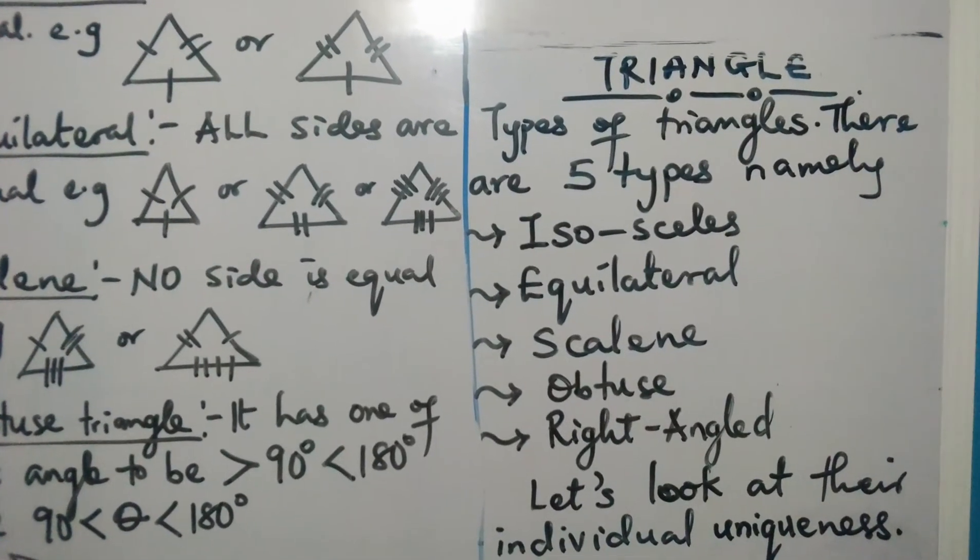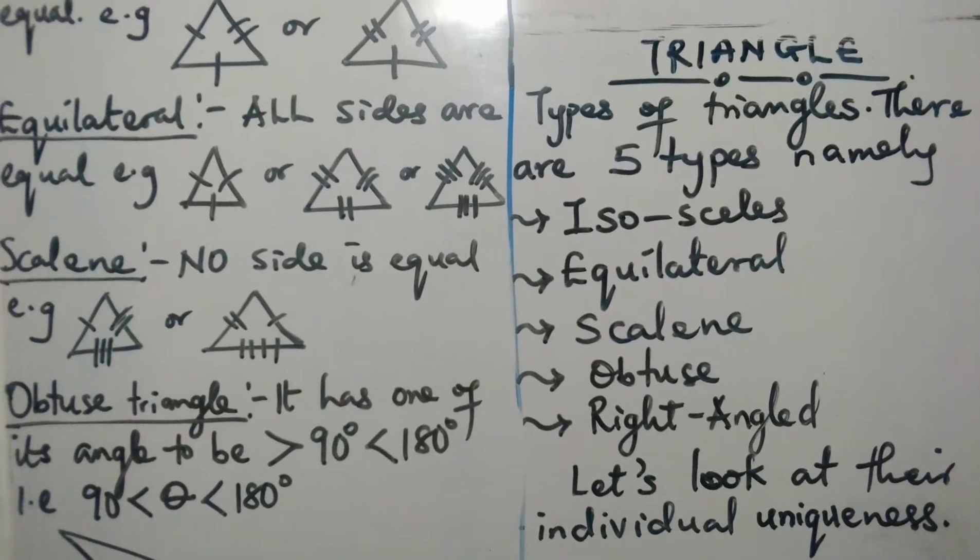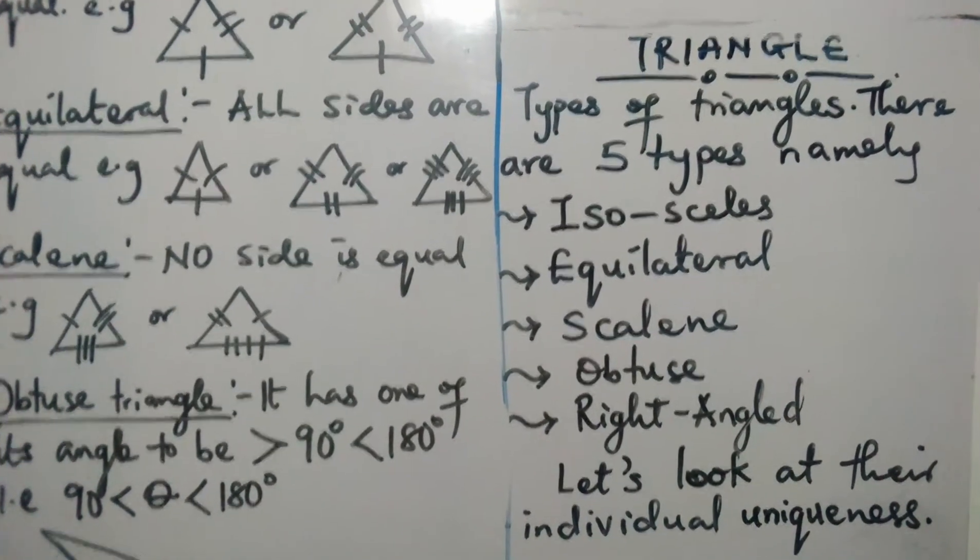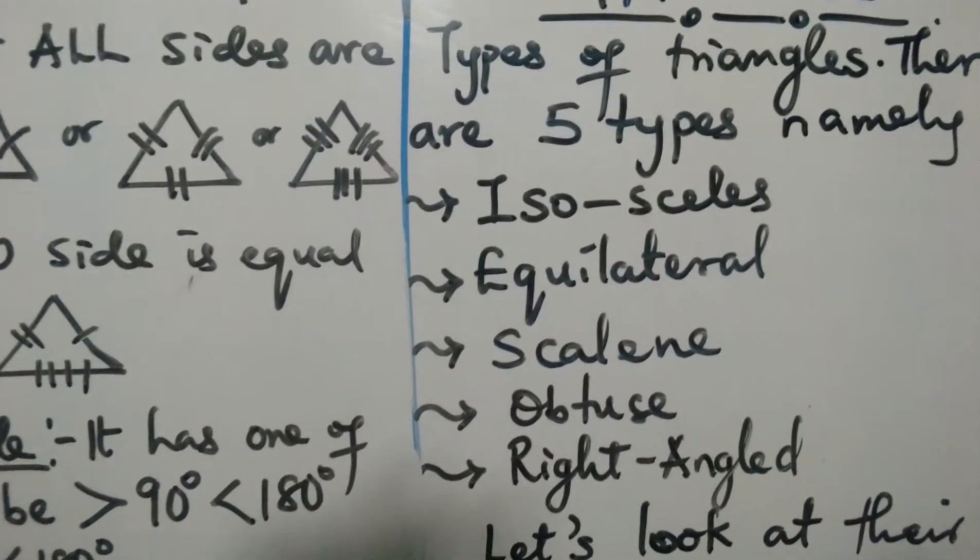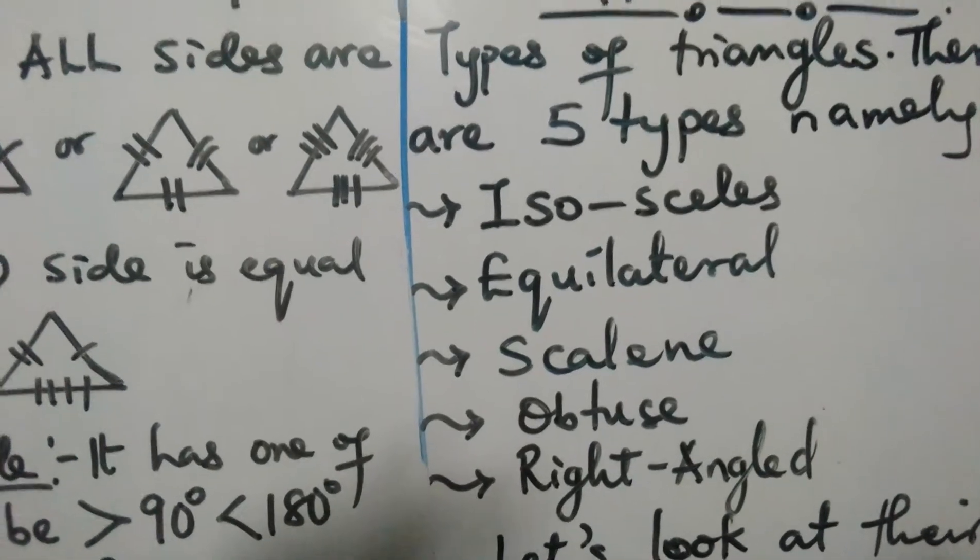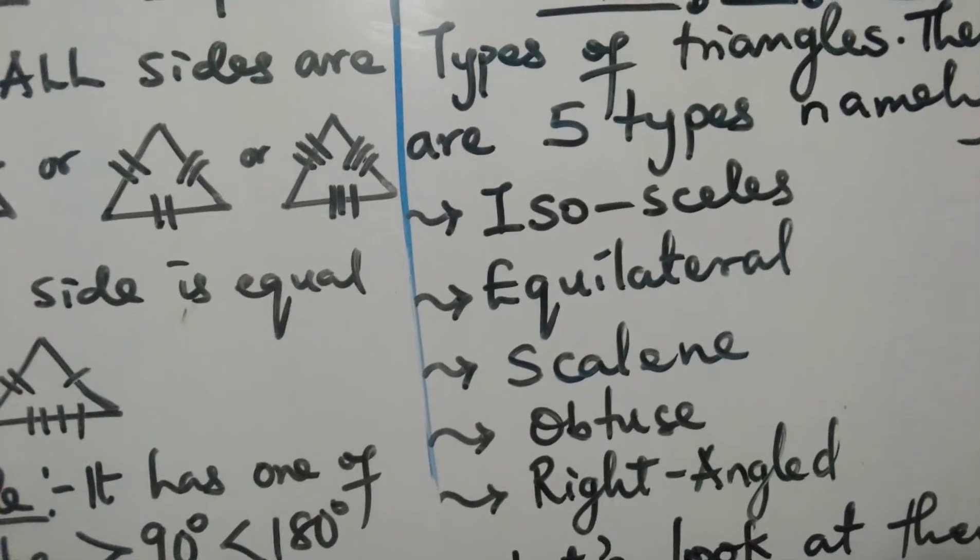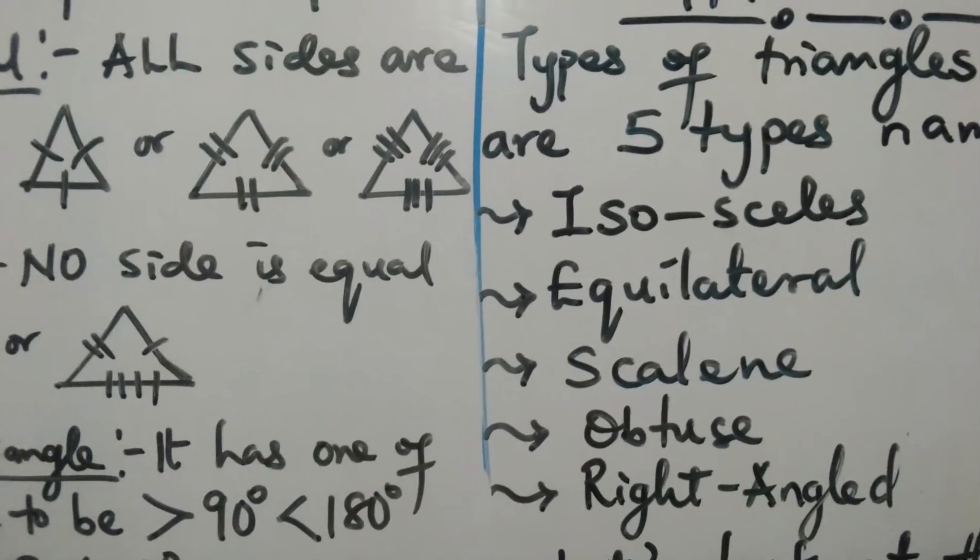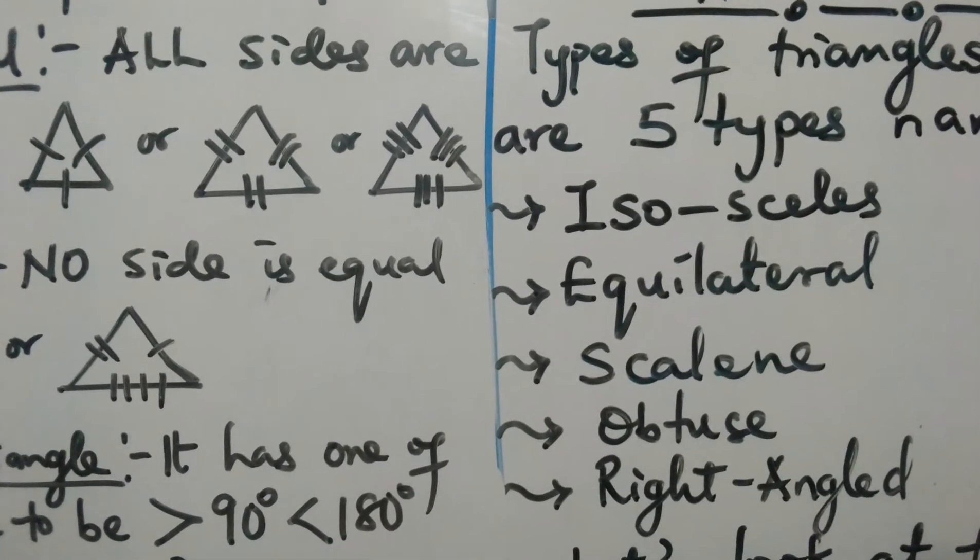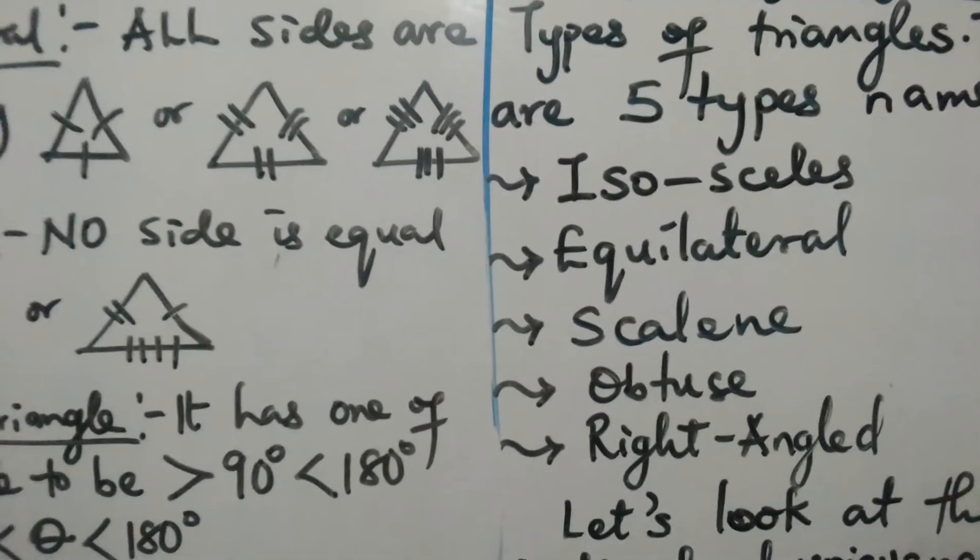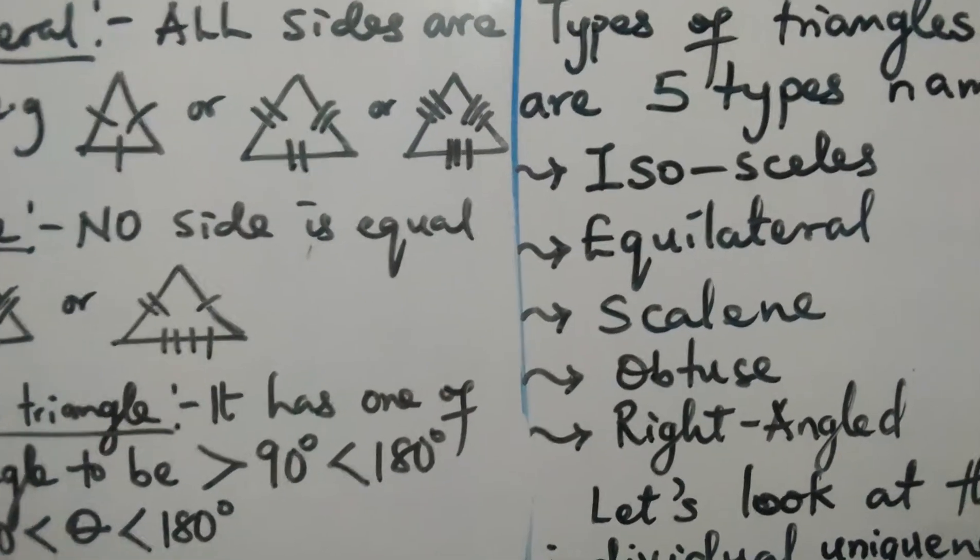We continue from where we stopped some minutes ago. We said there are five types of triangles: isosceles, equilateral, scalene, obtuse, and right angle triangle. So let's look at the peculiarities of each, their individual uniqueness.